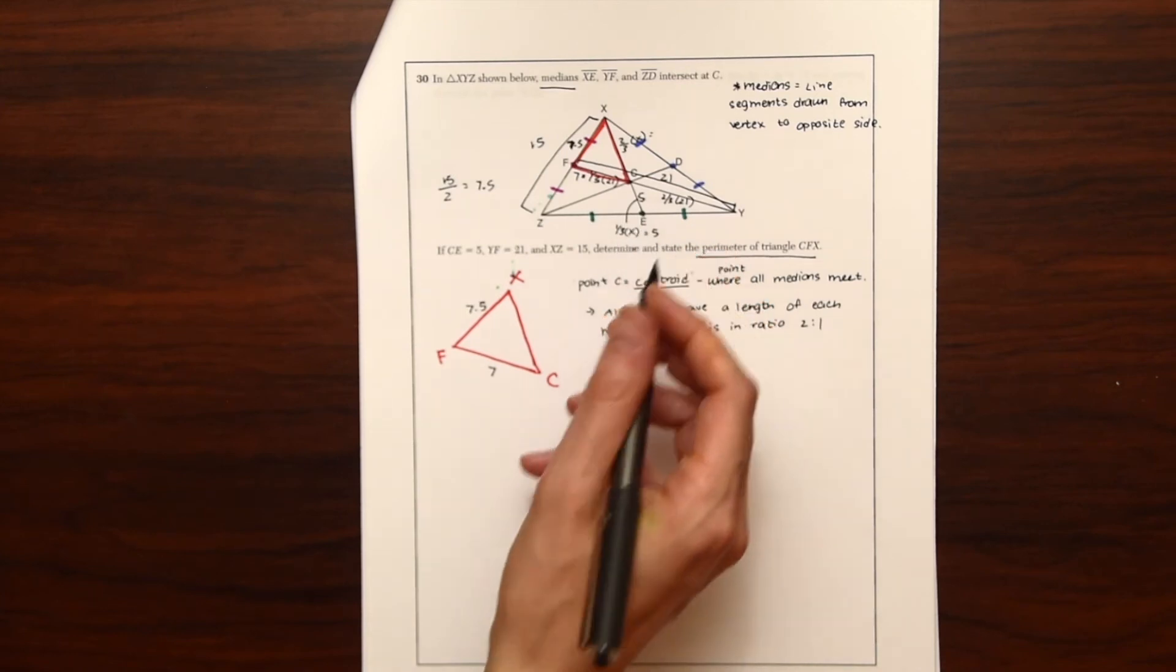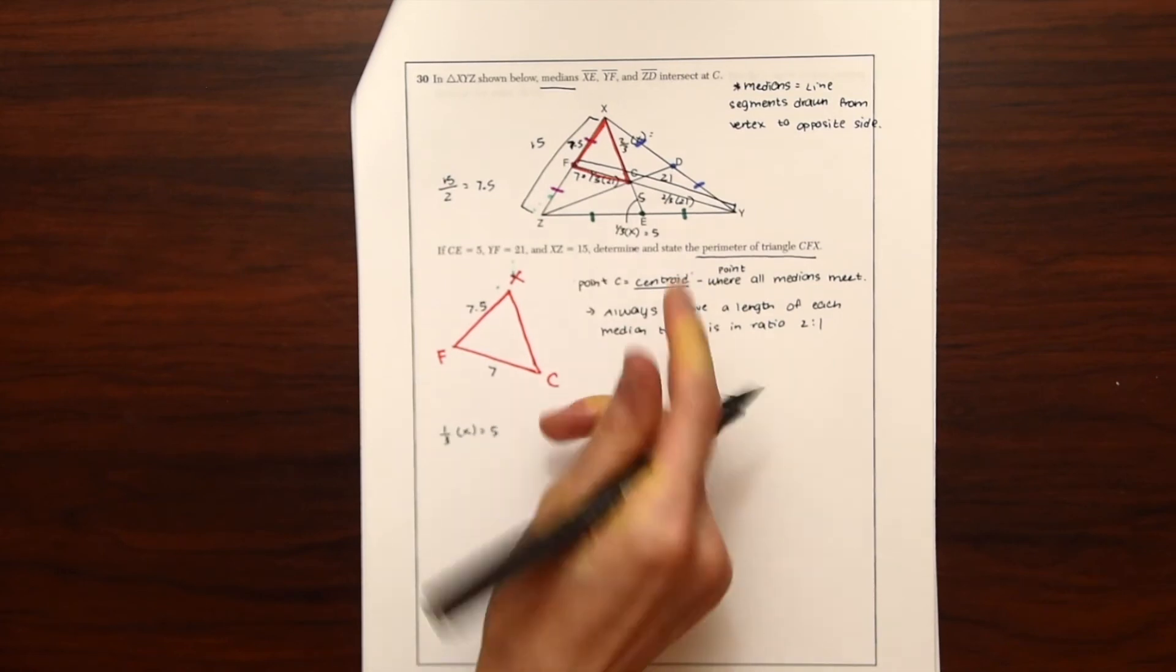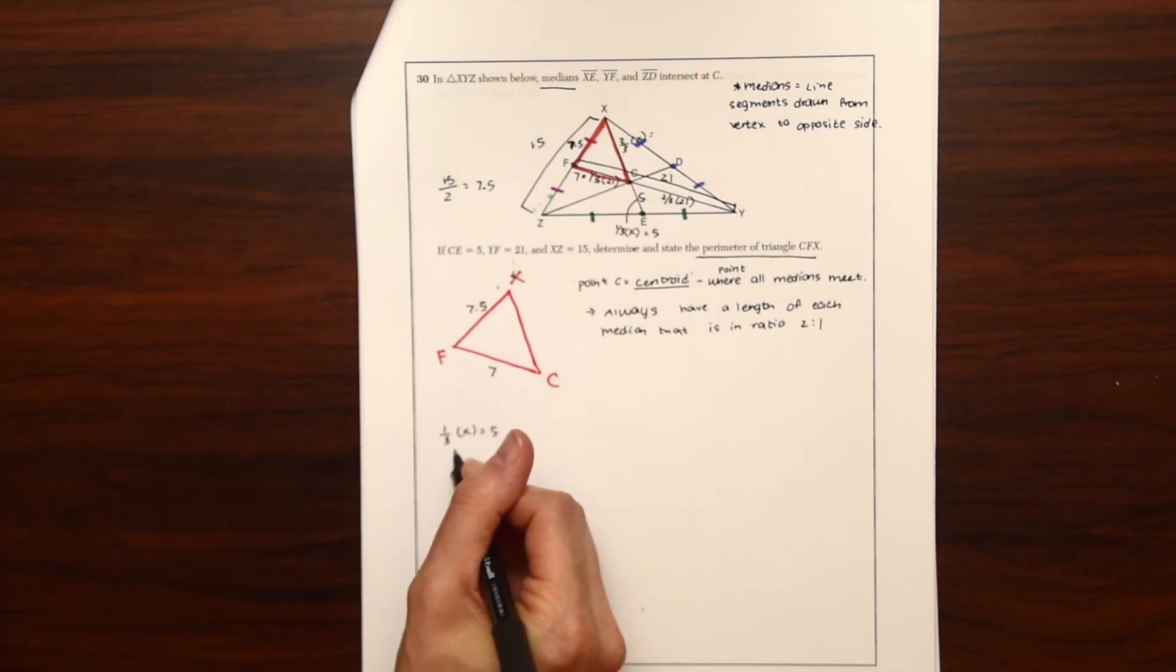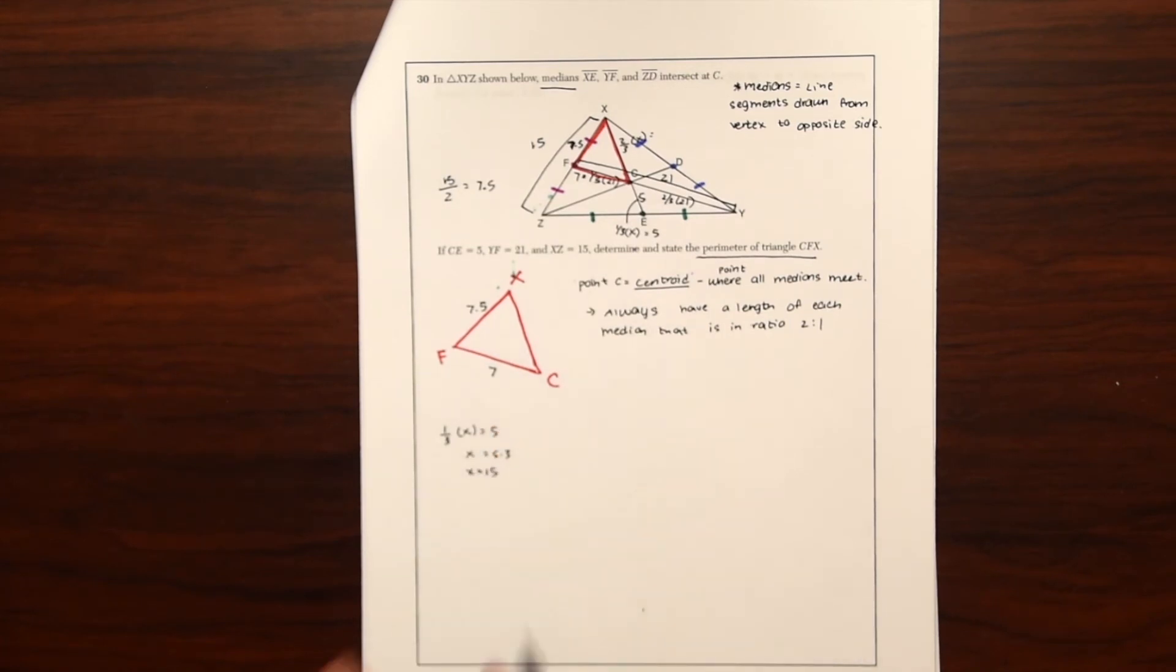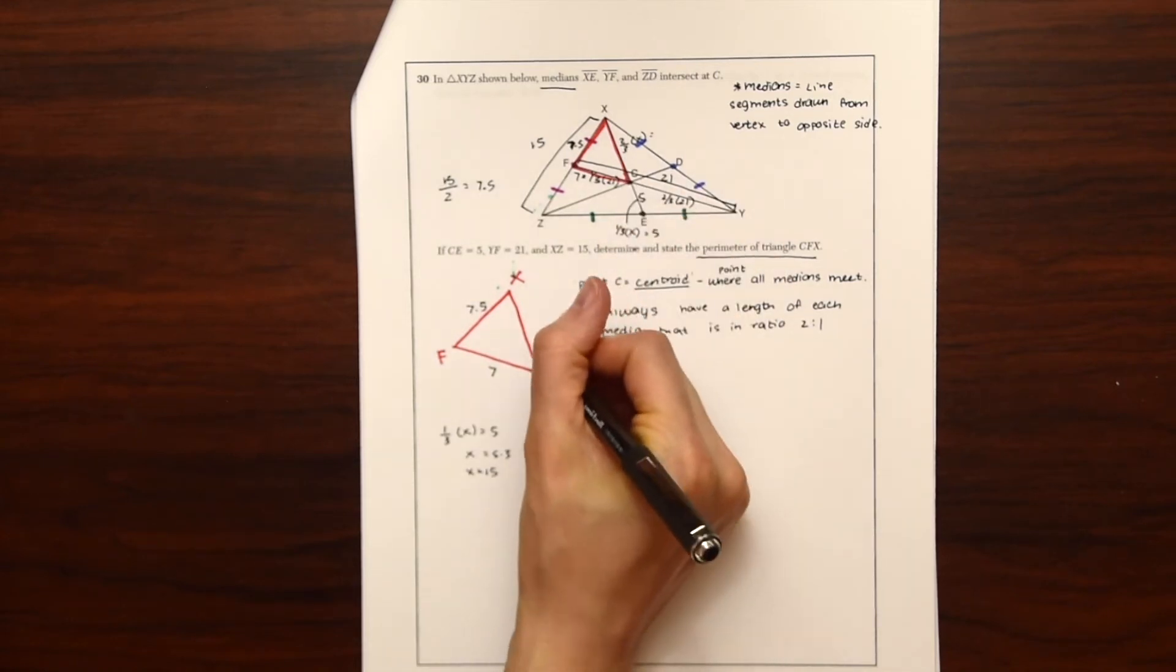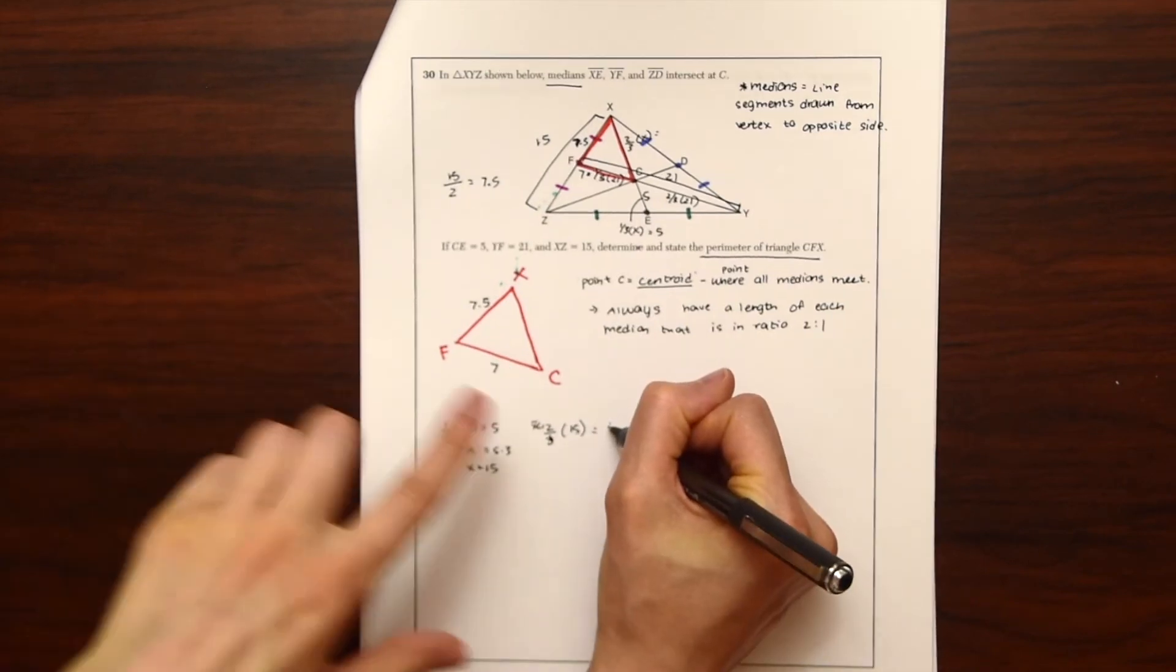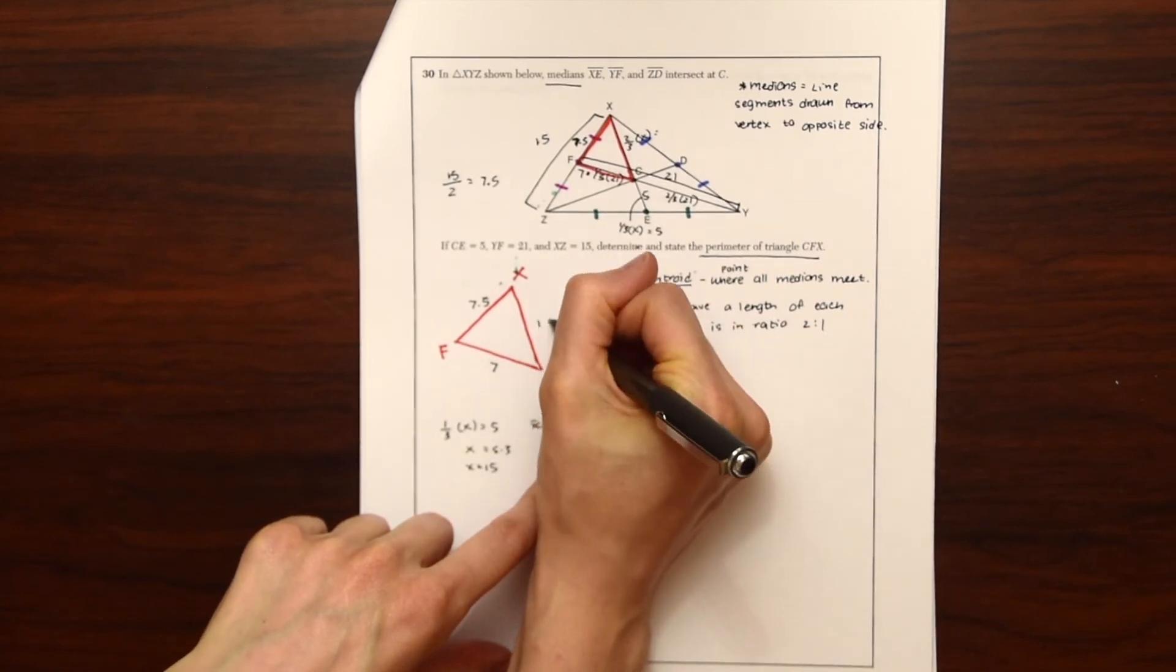So let's just do a little algebra. To find the value of XC, we're going to find one third of X is equal to five. So we're just going to bring the three around and multiply it times five. So we get X is equal to 15. So knowing X is equal to 15, we can plug that into the value for XC. So XC is going to be equal to two thirds times 15, which is 30 all over three, which gives us 10.